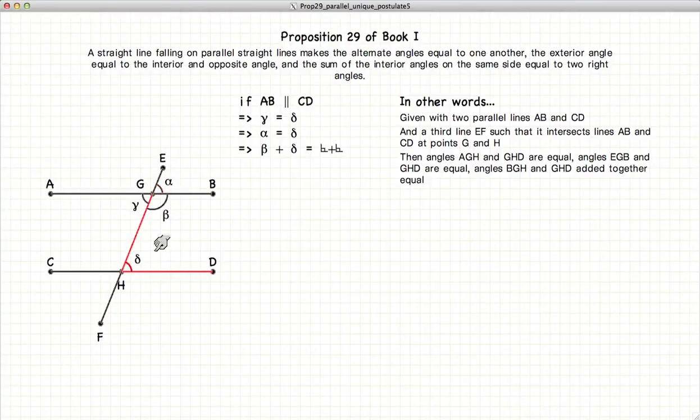Also, if the two lines are parallel, the interior and opposite angles will be equal, so gamma will equal delta. And finally, the two interior angles beta and delta will sum up to two right angles or 180 degrees.